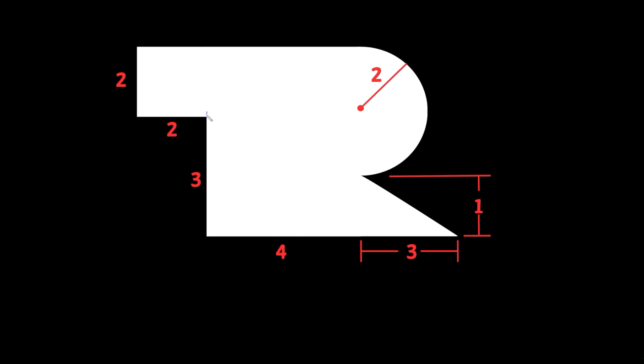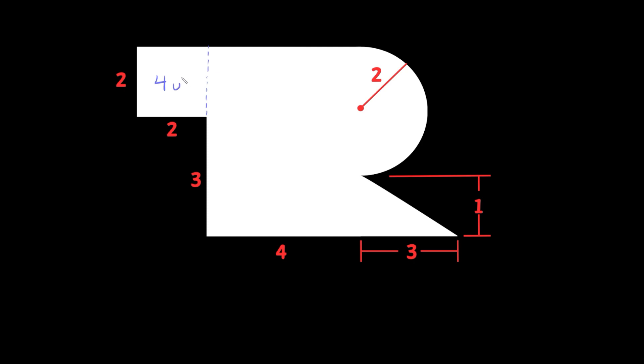Let's start on the top left over here. We can see that this distance right here is 2 and this distance is also 2. So if I drew a dotted line here, you can see that this looks like a square, and we know how to find the area of a square. This area — I'll shade it in blue — would just be 2 times 2, which is equal to 4 units squared.